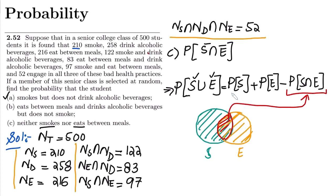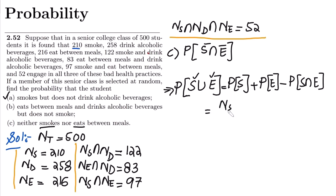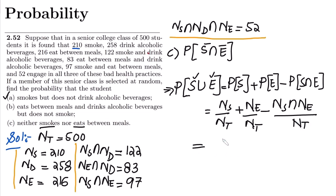Now let me write the values. P(S) = n(S) divided by n(T), and P(E) = n(E) divided by n(T), minus P(S intersection E). So n(S) is 210 divided by 500, plus n(E) which is 216 divided by 500, minus n(S∩E) which is 97 divided by 500.